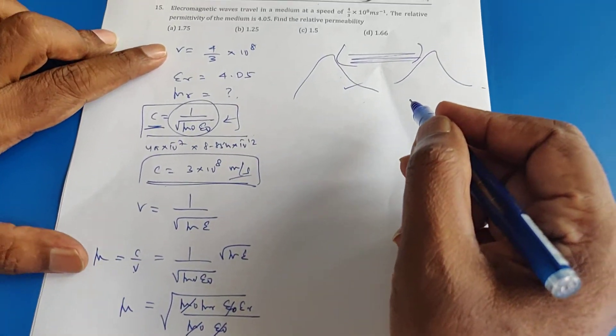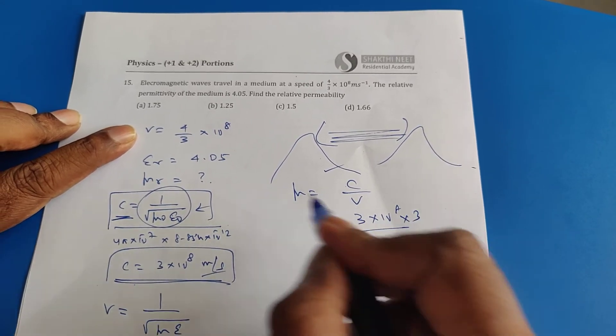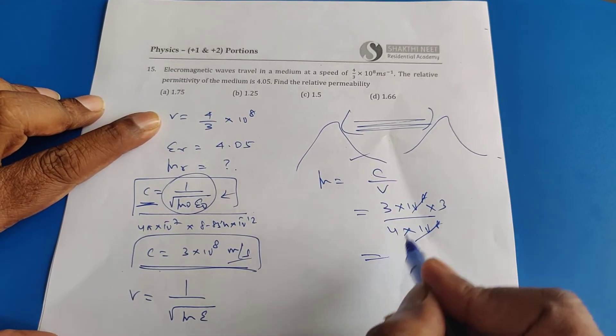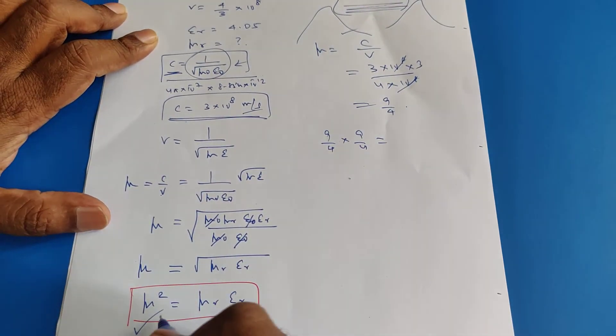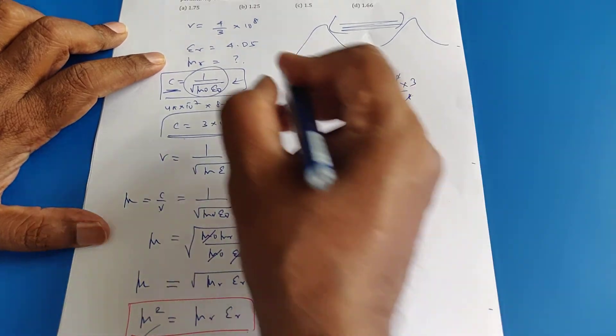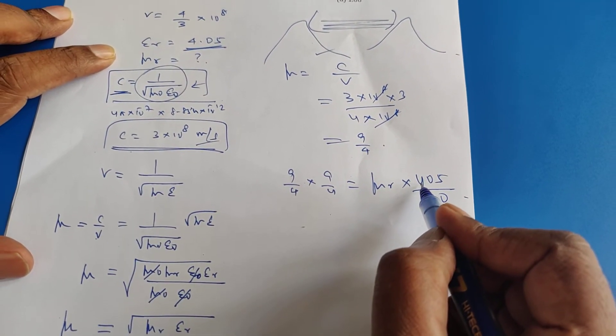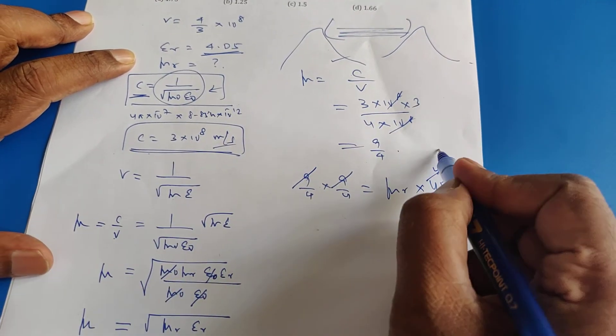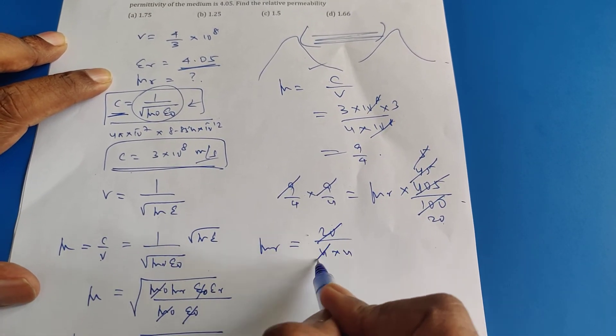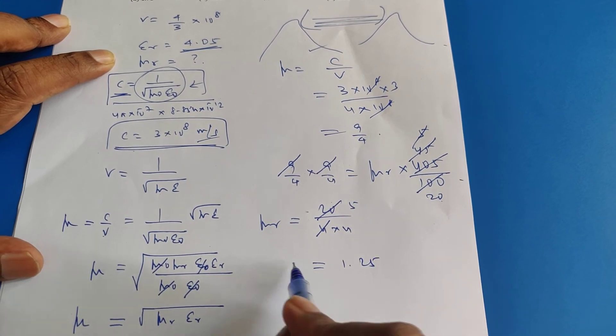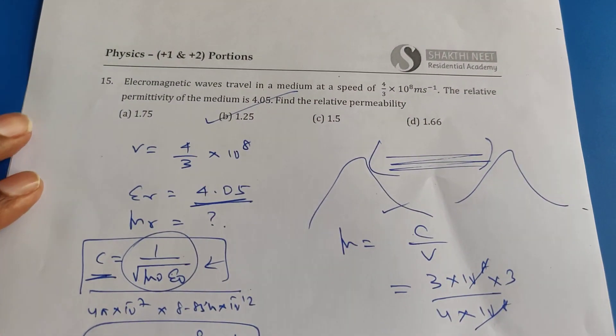Here what is given? V is given, so μ equals C by V. C is 3 into 10 power 8. Velocity is given as 4 by 3. 3 goes to the numerator, 3 and 10 power 8 gets cancelled, you get 9 by 4. That is μ. So I got the value of μ, 9 by 4 into 9 by 4. μ squared equals μ_r, I have to find, and ε_r I know is 4.05. I write it as 405 by 100. Now total the digits, it's 9, so divisible by 9. Cancel this, 45, divisible by 9. Cancel this, you get 5. You can cancel this, 20. Bring this 20 here divided by 4 into 4, that is your μ_r. Now you can cancel by 4, you get 5 by 4. What is the answer? 1.25. This is a dimensionless, unitless quantity. μ_r is 1.25, and that answer is given in the option B. That's the correct answer.